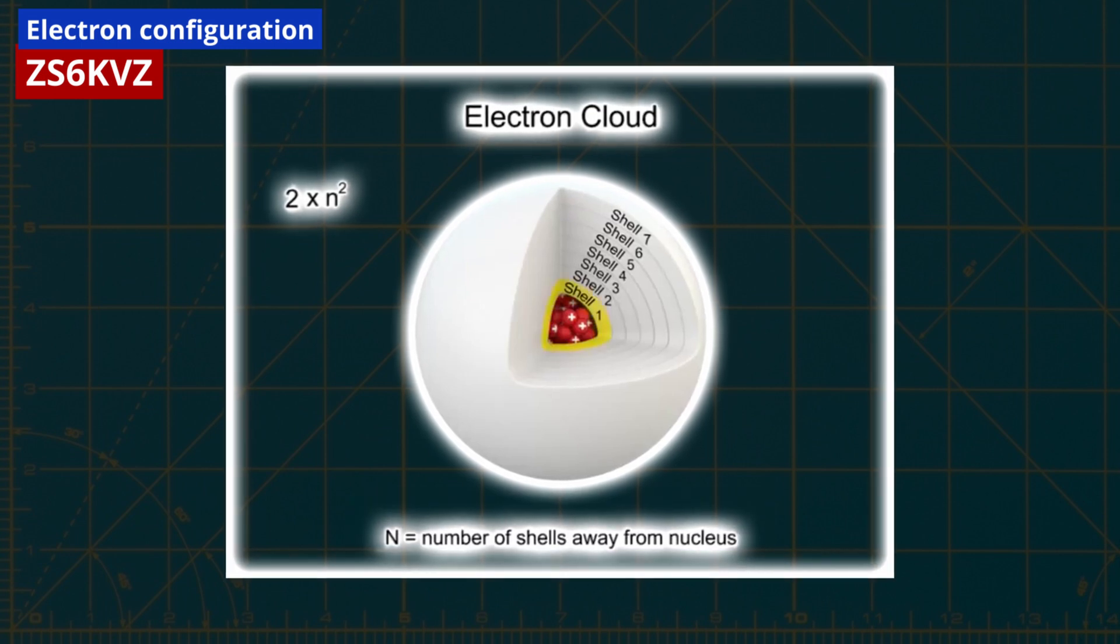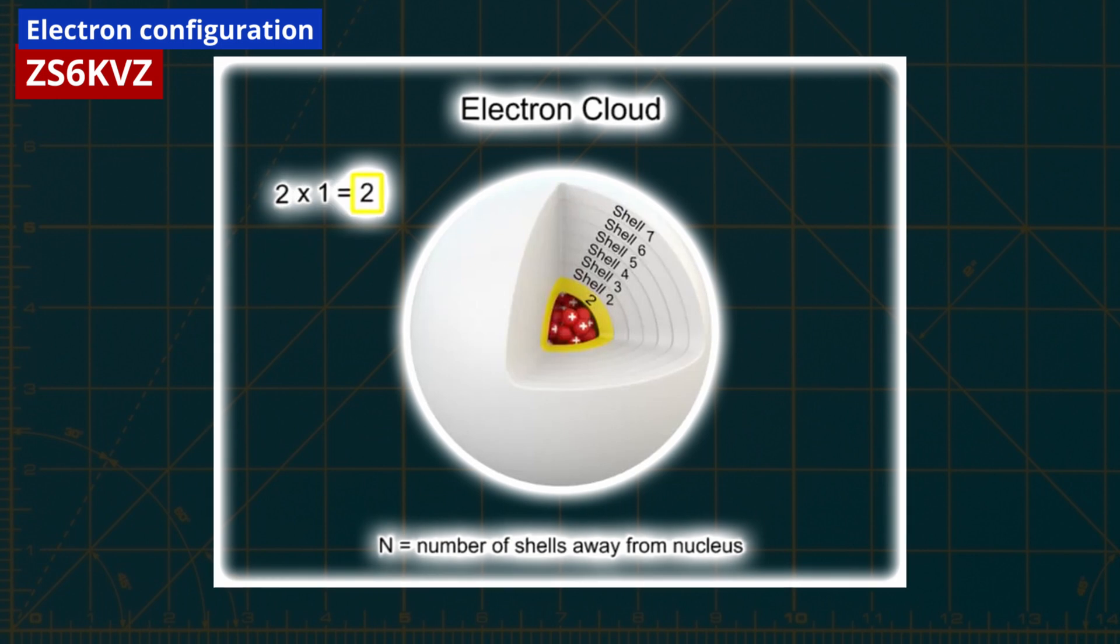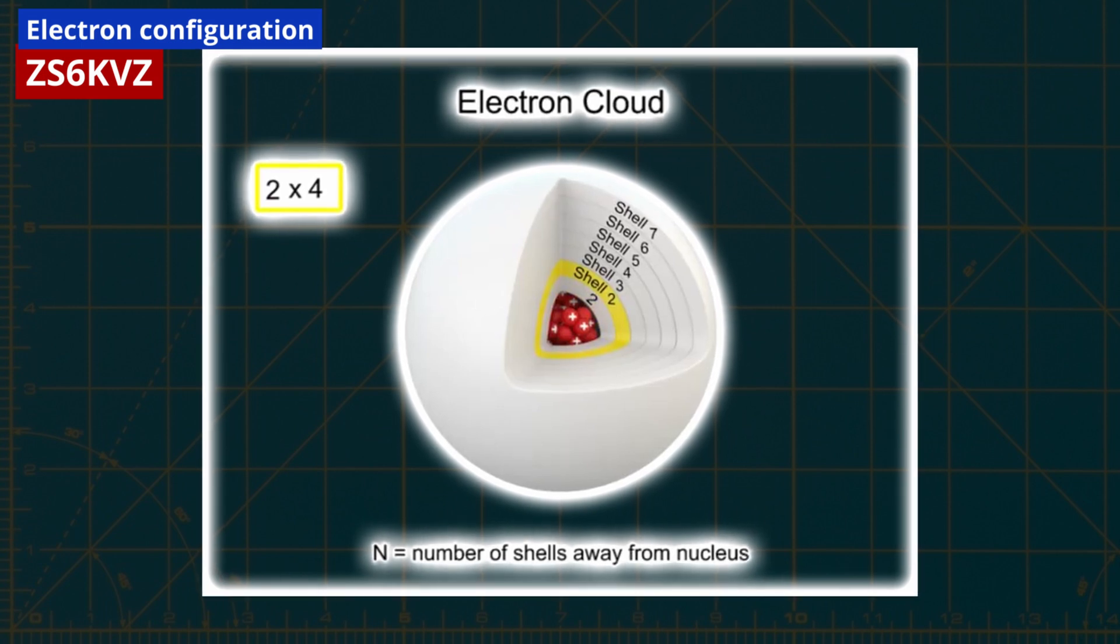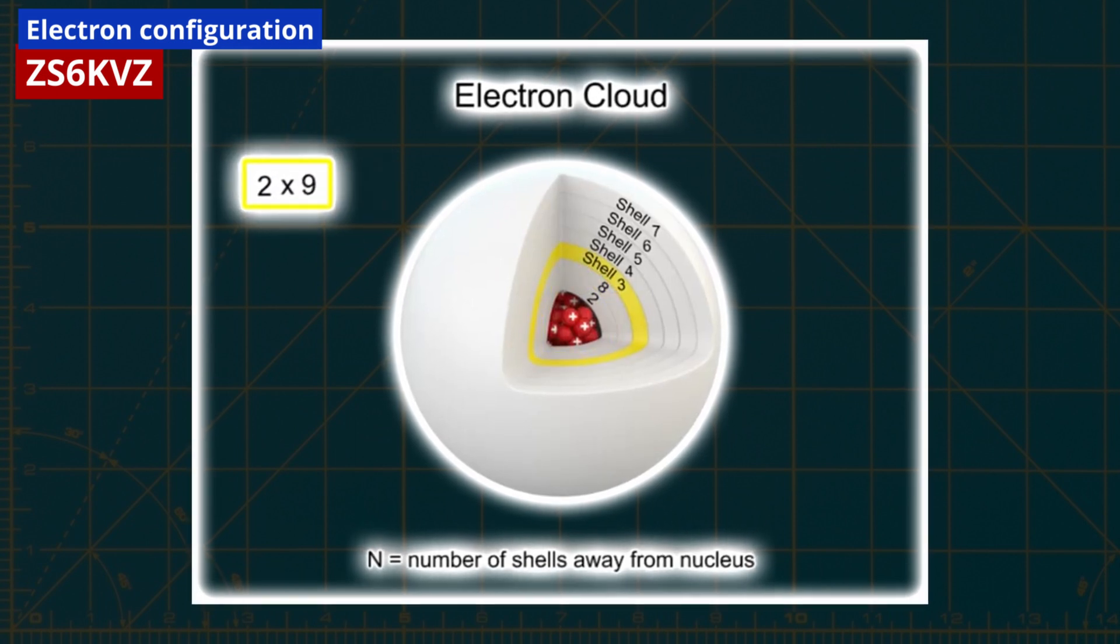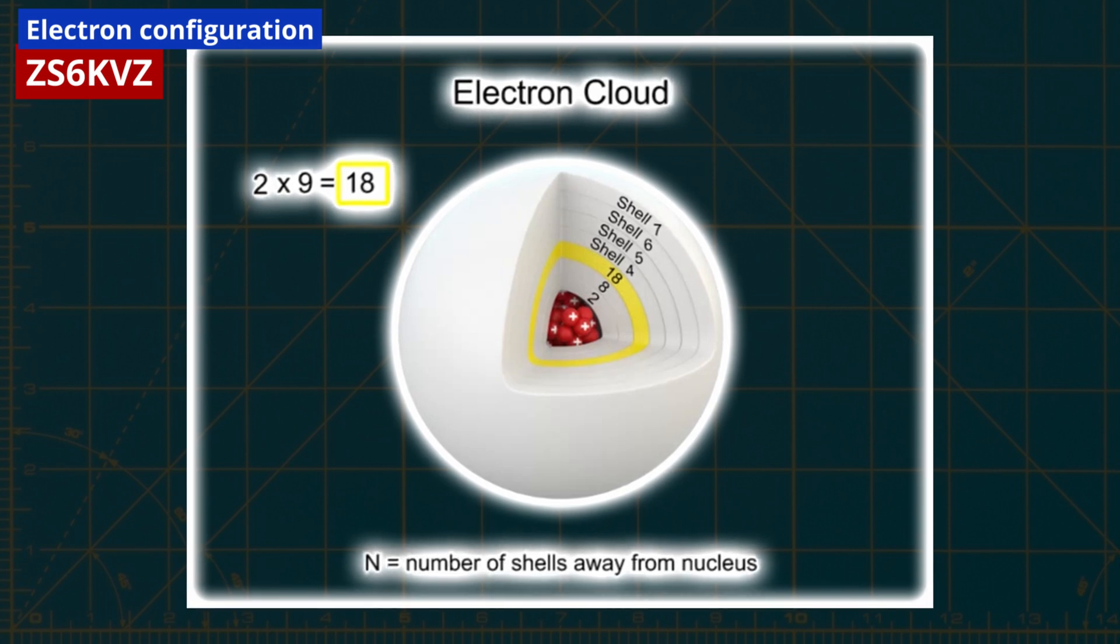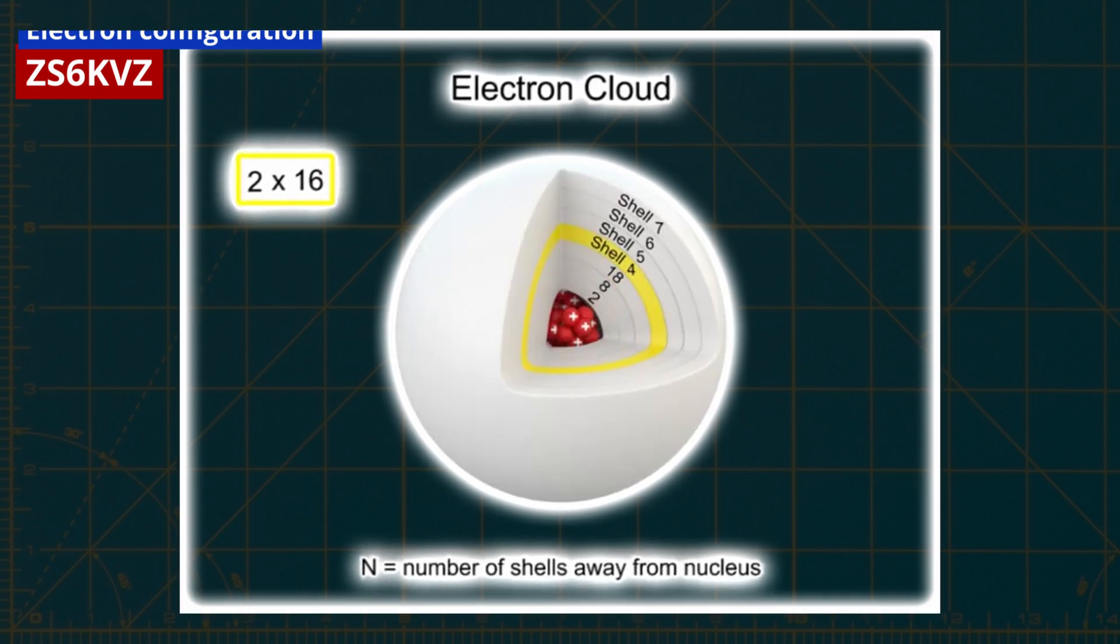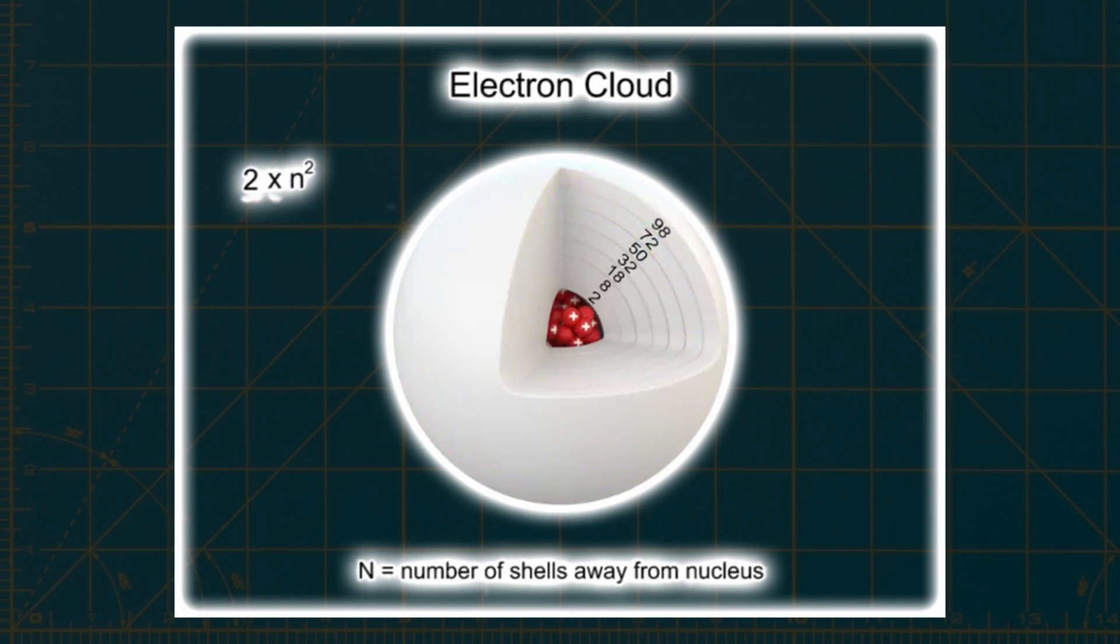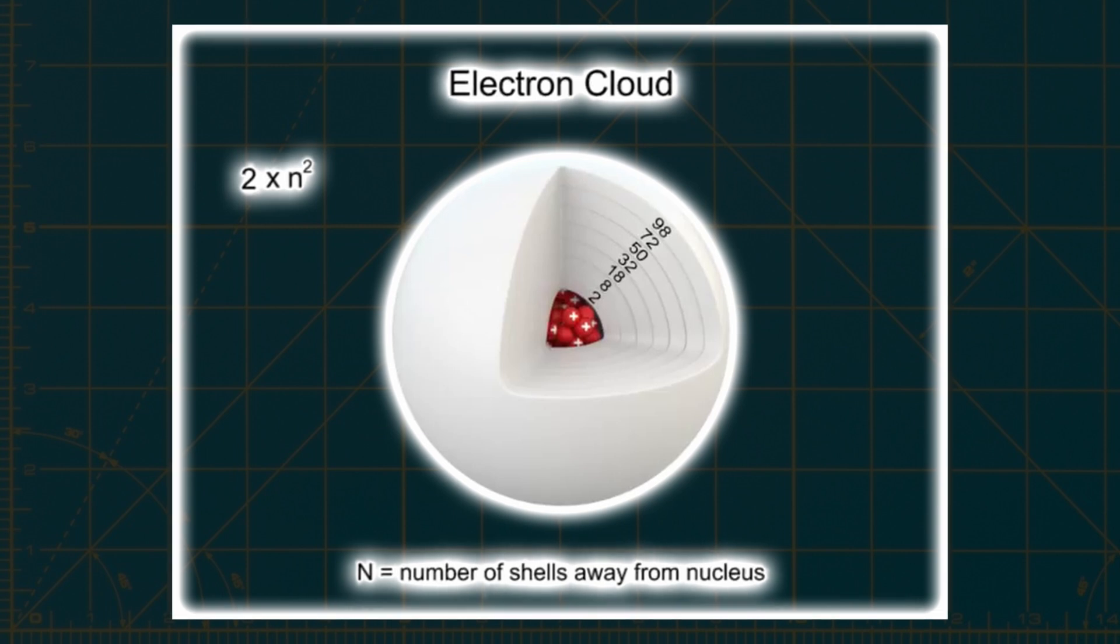To calculate the maximum number of electrons in a shell, we can apply the equation 2 times n squared. For example, the first shell would have 2 times 1 squared, which equals 2 electrons. Moving on to the second shell, we have 2 times 2 squared, resulting in 8 electrons. The third shell would contain 2 times 3 squared, equaling 18 electrons. Similarly, the fourth shell would hold 2 times 4 squared, resulting in 32 electrons. This pattern continues for higher shells. It is important to note that elements can have up to 7 shells, but not every shell may reach its maximum electron capacity. The formula presented here allows for the calculation of the theoretical electron capacity for elements with a maximum of 7 shells.